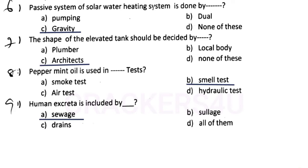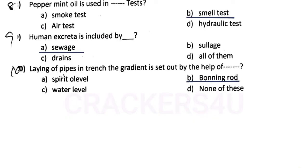Question number nine: human excreta is included by — answer option A, switch. Question number ten: laying of pipes in trench, the gradient is set out by the help of — answer option B, boning rod.